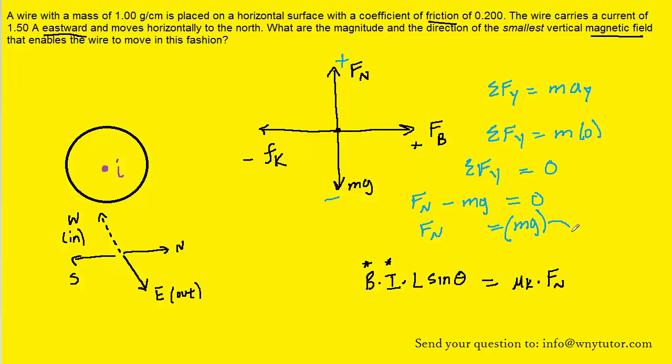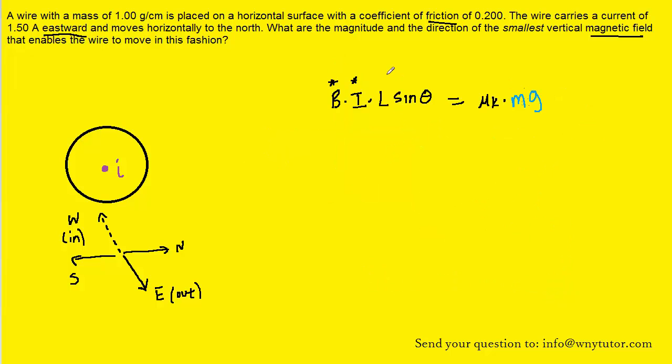Let's substitute mg in for the normal force. The question is asking us to find the magnitude and direction of the magnetic field, symbolized by uppercase B. We're going to divide both sides of this equation by I L sine theta, and on the left side that term will cancel out leaving us with just B.